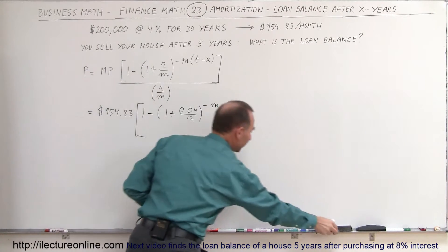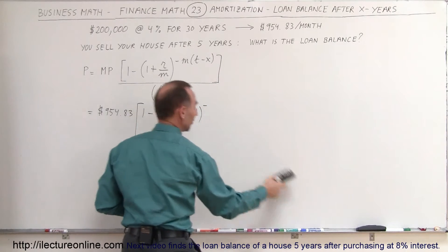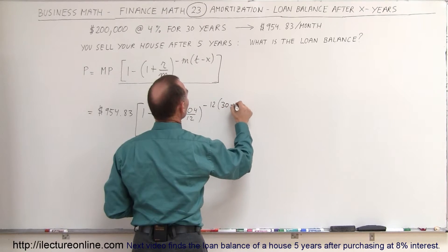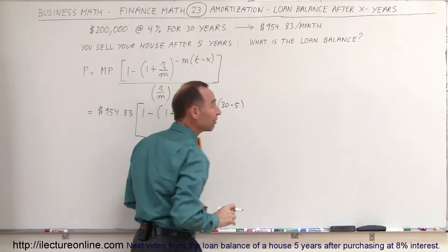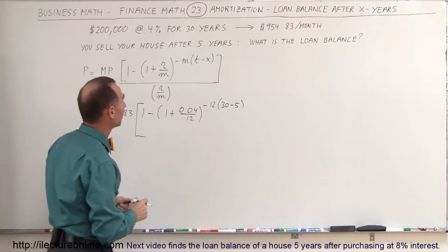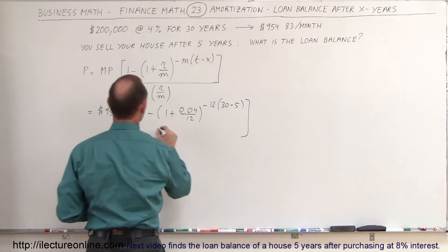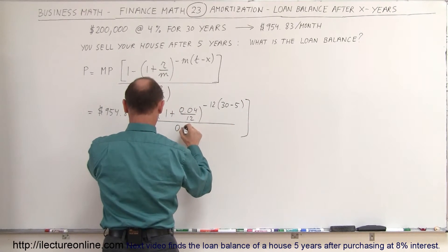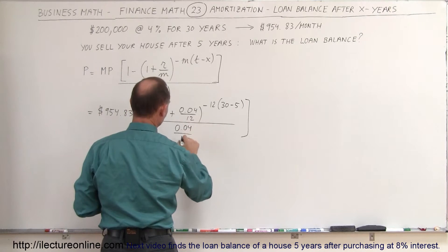I don't want to put M down. I want to put what M is equal to. In this case, that would be 12 times (30 minus 5). That would be 12 times 25, which is, of course, 300. And then we divide the whole thing by 0.04 divided by 12.